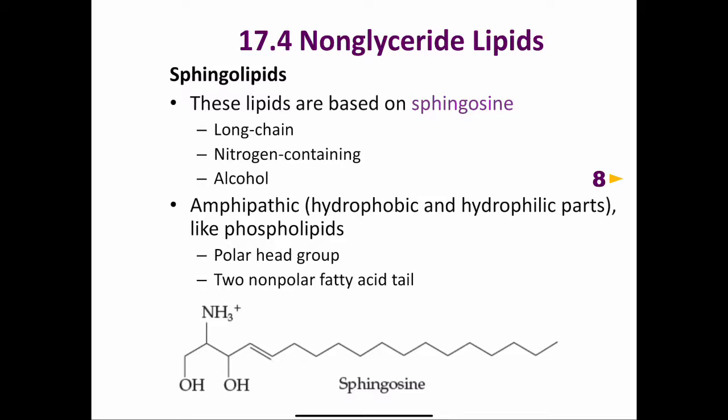Sphingolipids are structural components of cellular membranes. They are derived from the molecule shown here, sphingosine, a long-chain nitrogen-containing amino alcohol. It is called an amino alcohol because we have an amino group, which is protonated, and two alcohol groups.